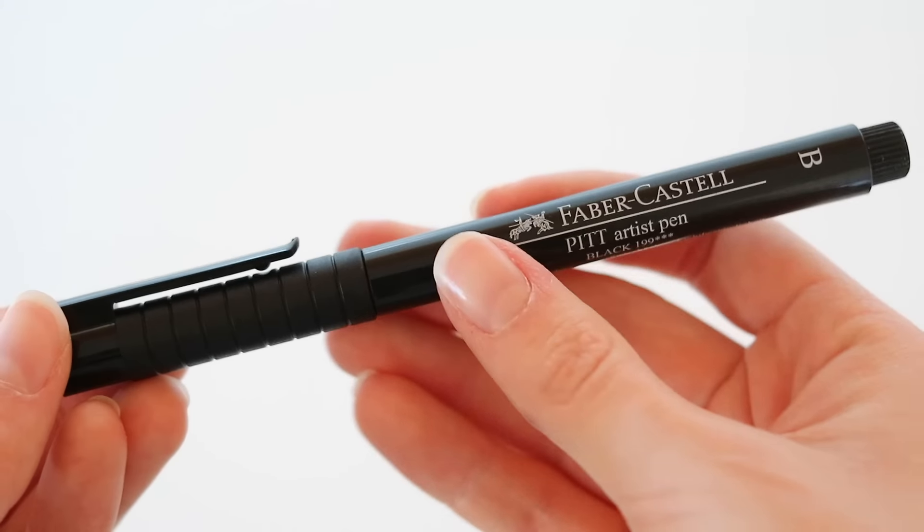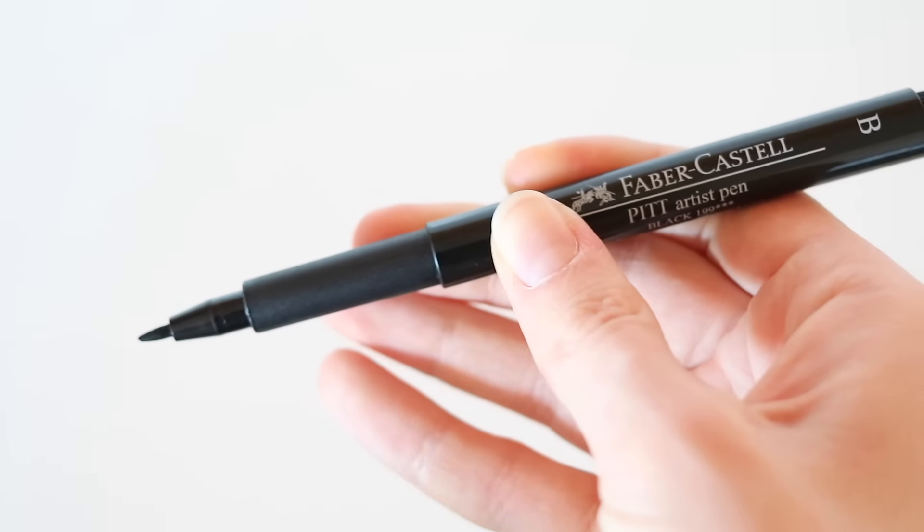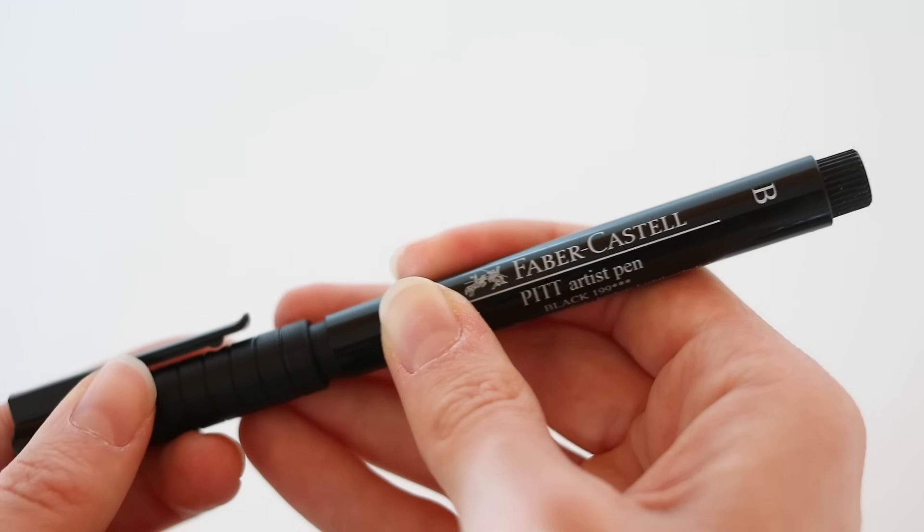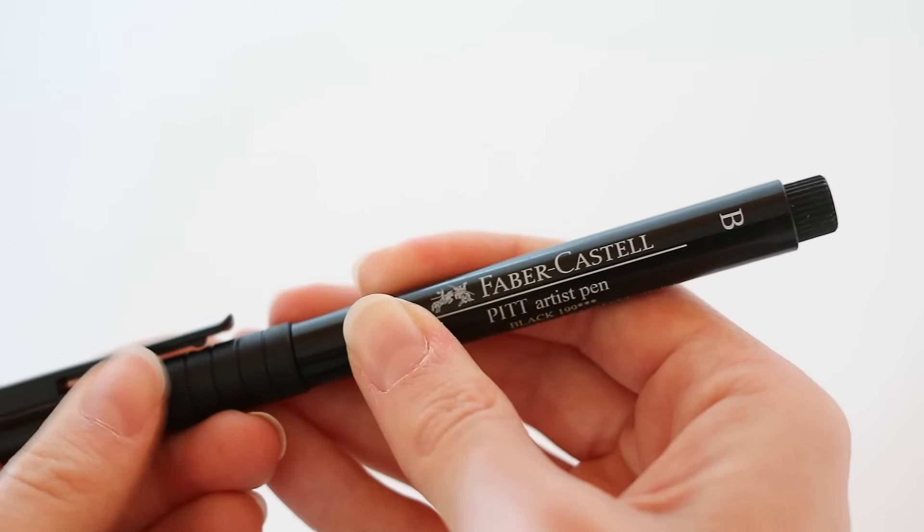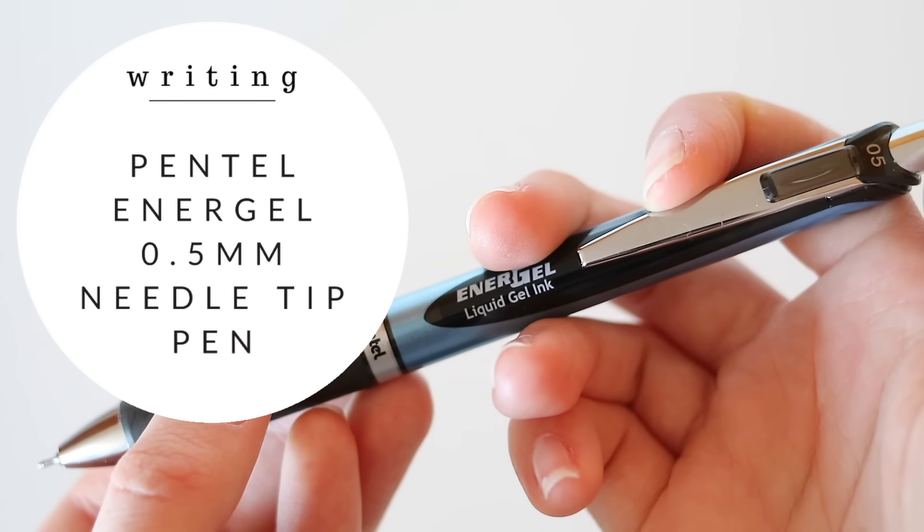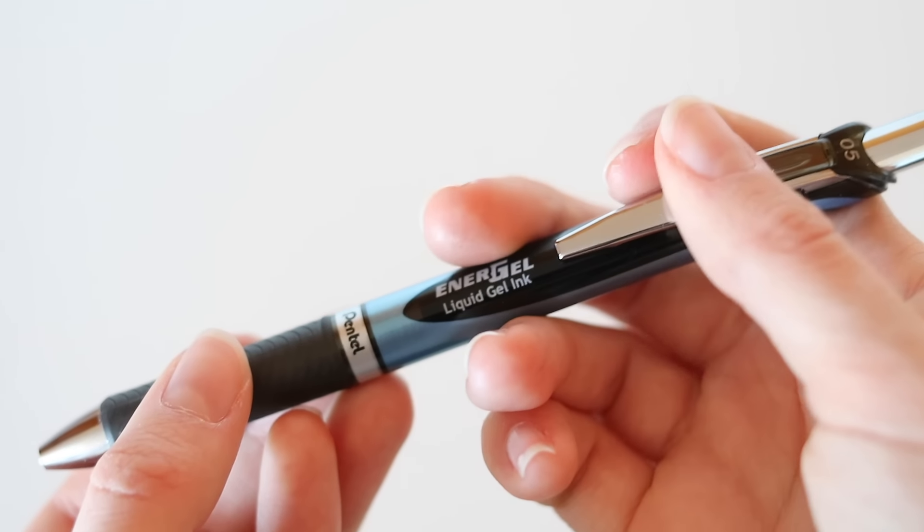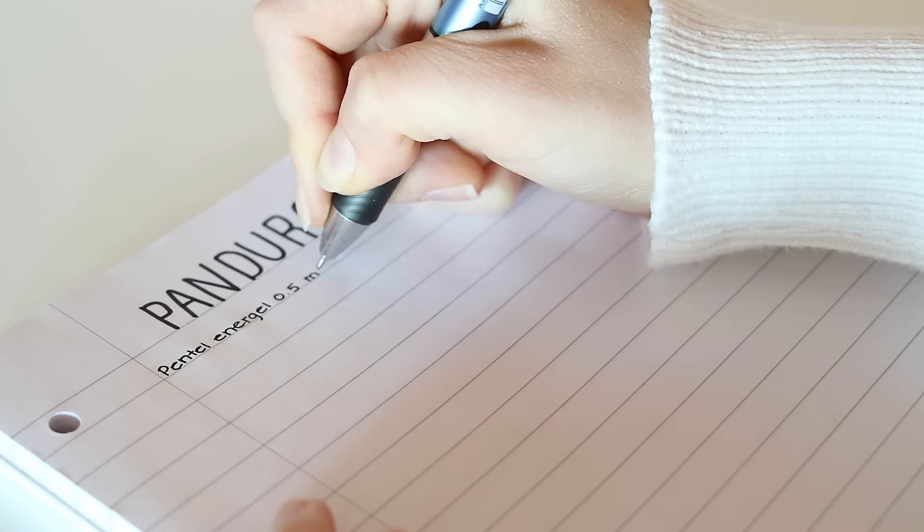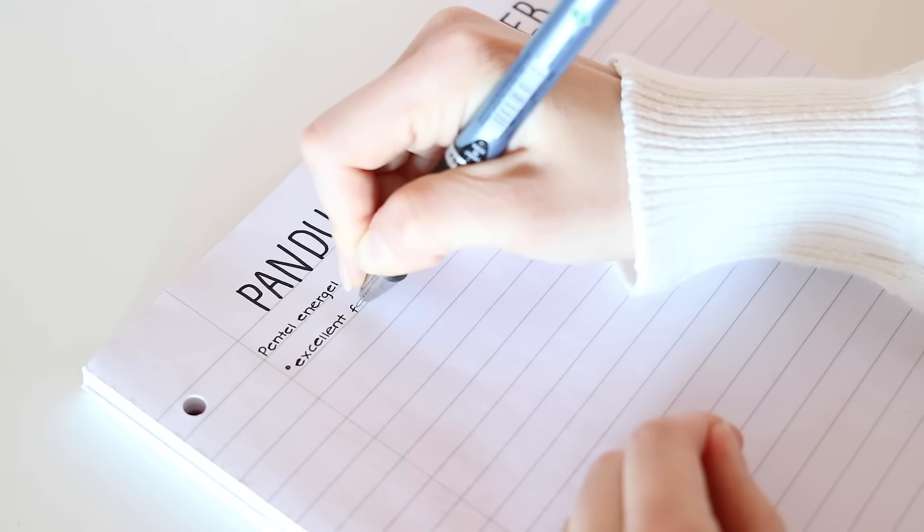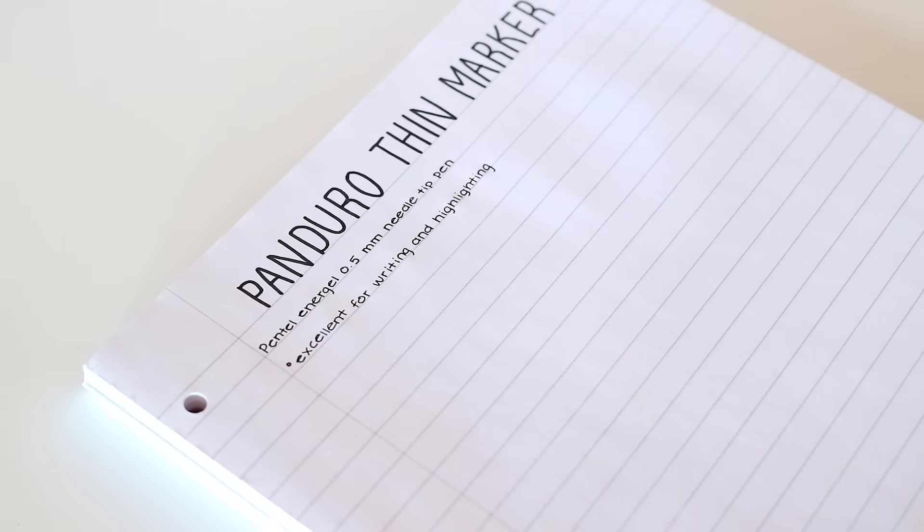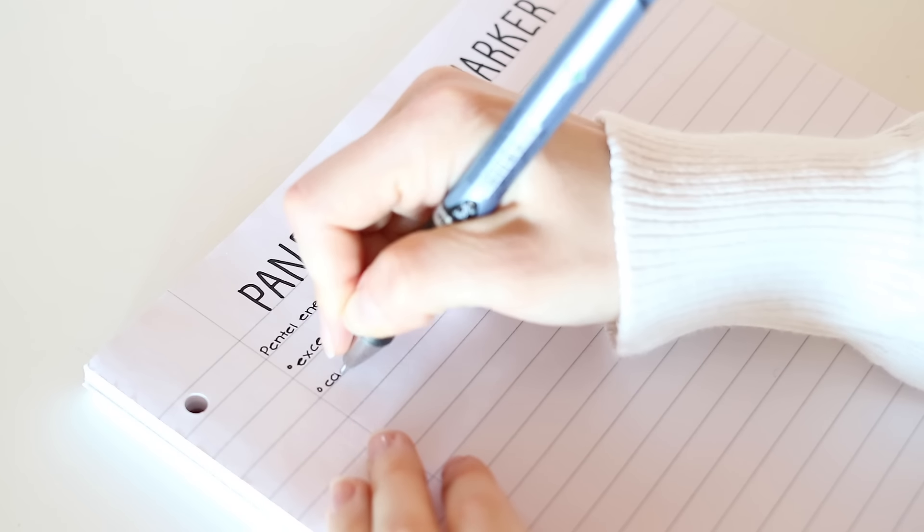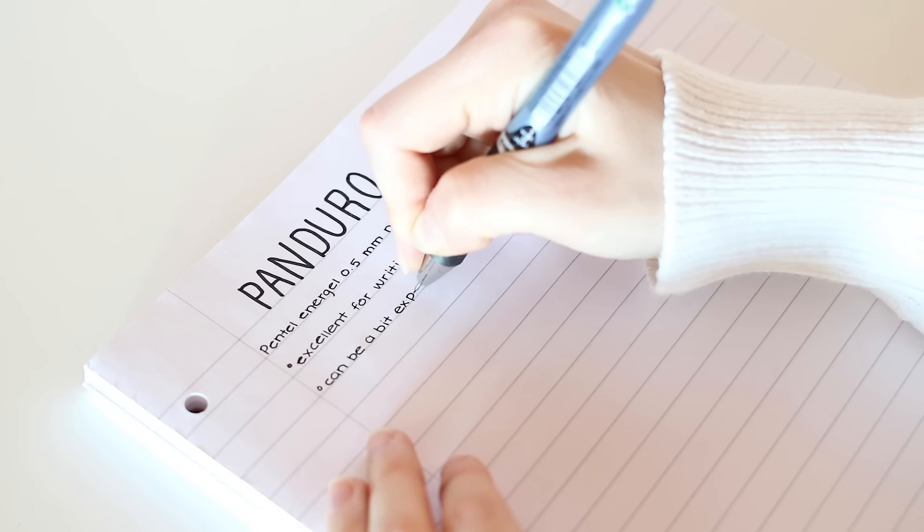A good alternative though that I've tried out is the Faber-Castell Pitt Artist Pen. The ink is a tiny bit lighter but otherwise it looks just the same. The next pen is the Pentel EnerGel 0.5 millimeter needle tip and it is hands down my all-time favorite pen for writing. It also has the quickest drying ink that I've ever come across so it is perfect for highlighting too.